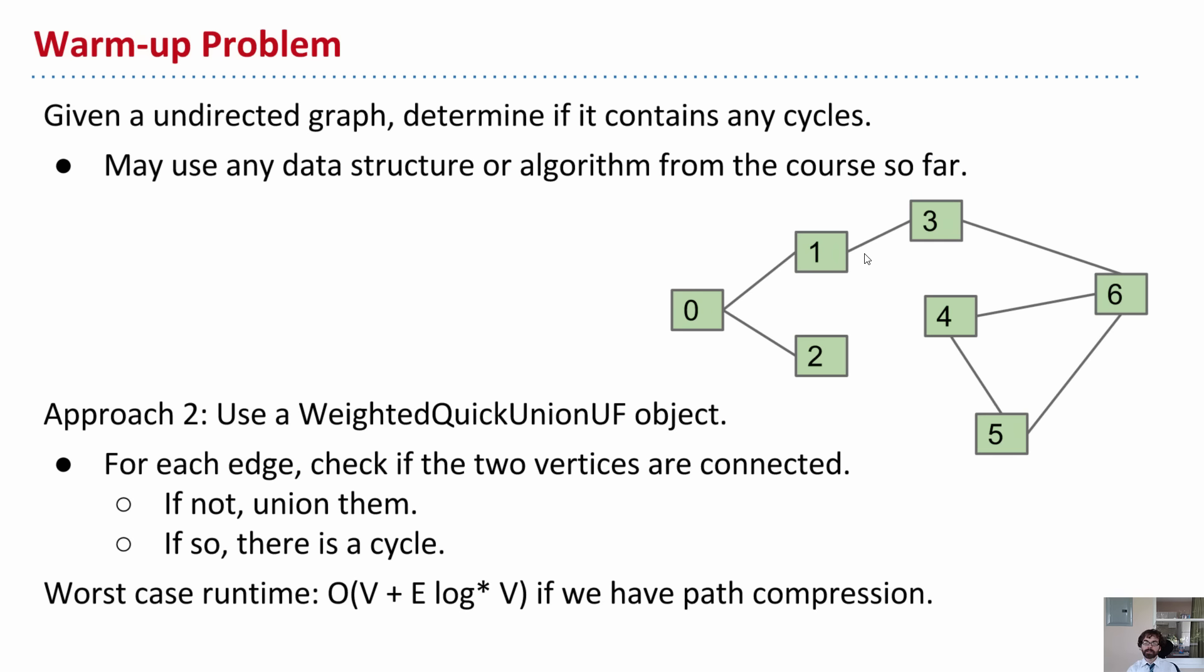OK, and so we'll keep going. And so this algorithm, we'll keep working our way through the graph. And if at any point we happen to see two edges, so maybe we do this edge, then this edge, at some point we'll get to this edge, and we'll say are 5 and 6 connected. And the weighted quick union, since we've already union 4 and 5 and 4 and 6, this will be connected.